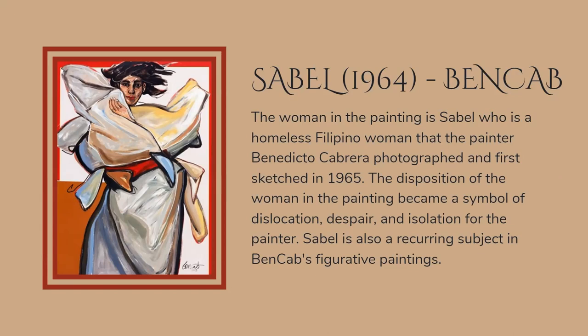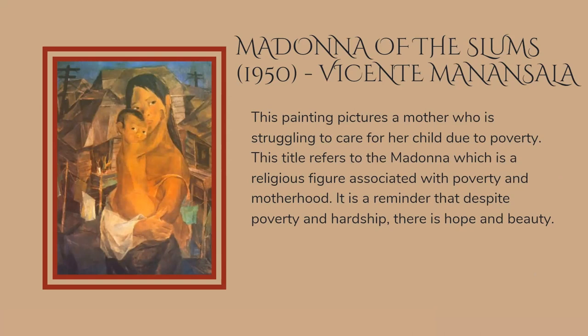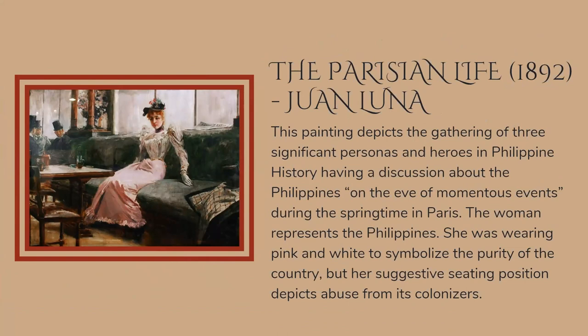Then we have Madonna of the Slums in 1950 by Vicente Manansala. This painting pictures a mother who is struggling to care for her child due to poverty. The title refers to Madonna, a religious figure associated with poverty and motherhood, and is a reminder that despite poverty and hardship, there is hope in beauty. Then we have another Juan Luna painting, The Parisian Life in 1892. This depicts the gathering of three significant personas and heroes in Philippine history, having a discussion about the Philippines in Paris. The woman represents the Philippines, wearing pink and white to symbolize the country's purity, but her suggestive seating position depicts abuse from its colonizers.